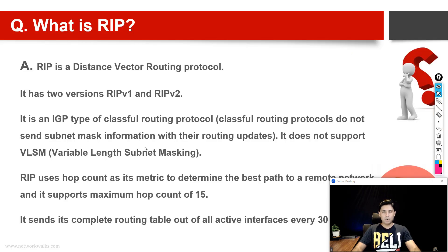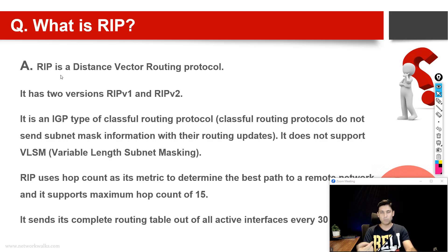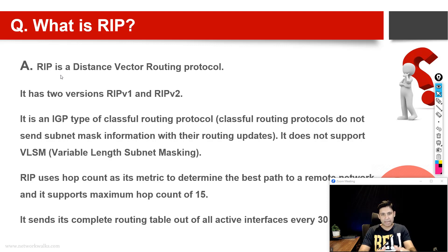First of all, an interviewer might ask you: what is RIP? Simply, RIP is a distance vector routing protocol. It has two versions: RIP version 1 and RIP version 2. It is an IGP type of routing protocol and it is a classful routing protocol.